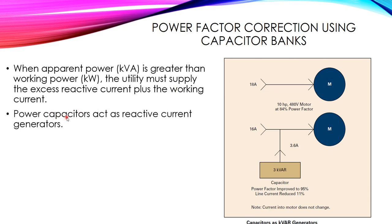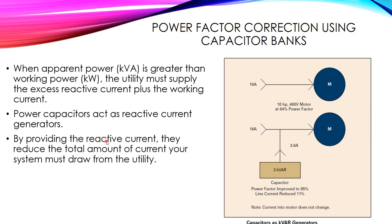Capacitors act as a reactive current generator — a source of reactive current — so the reactive current required from the grid is reduced. The current reduced from 18 amperes (active plus j reactive) to 16 amperes. By providing reactive power using the capacitor bank, you reduce the total amount of current your system must draw from the utility.